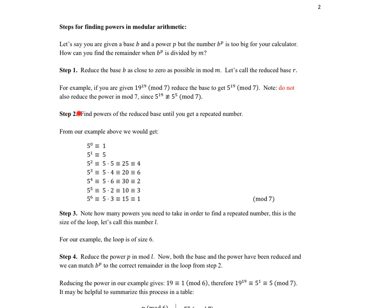So we can reduce the base — the 19 in the base — in the corresponding mod, but not the 19 in the power. We successfully reduce by subtracting 14 to get 5 in the base. Then in step two, we take our reduced base and look for a pattern that repeats. So we keep taking powers of 5 until we notice a pattern. In this case, we get 1, 5, 4, 6, 2, 3, and then 1 again. Once we see that repeated 1, we know the pattern is beginning and will repeat over and over.